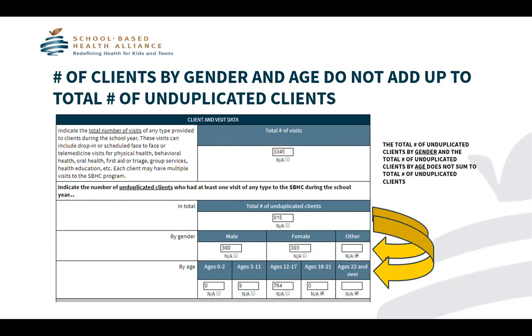Similarly, if you add up the clients by age — 9 and 764 — it equals 773. These two numbers should also add up to 815.